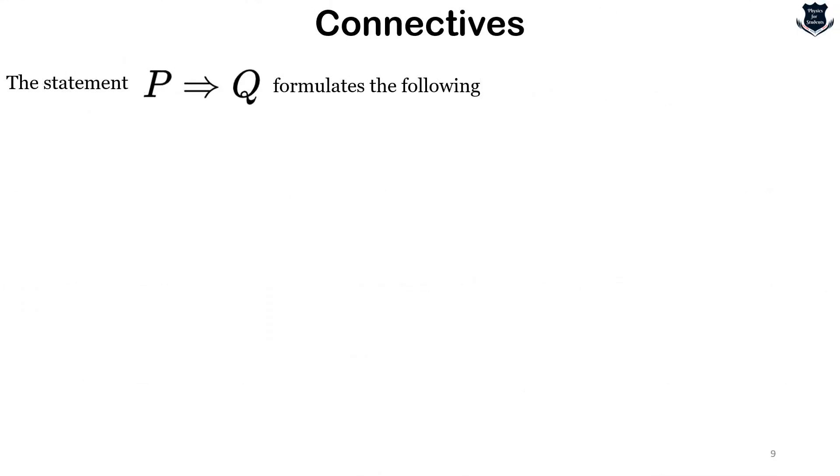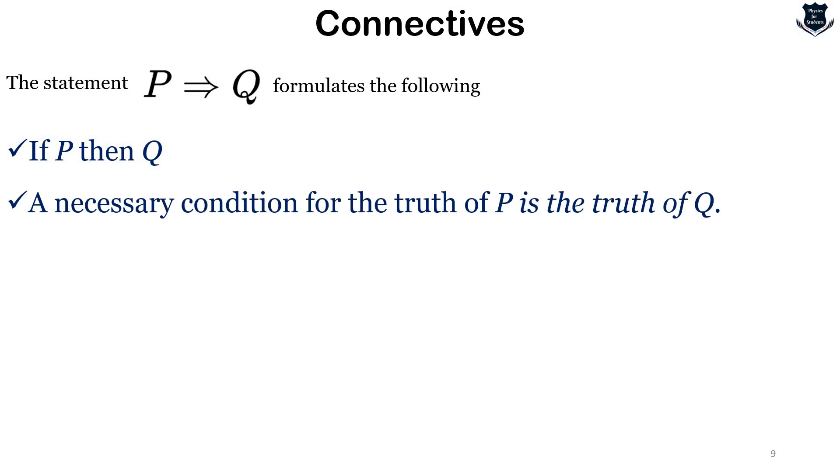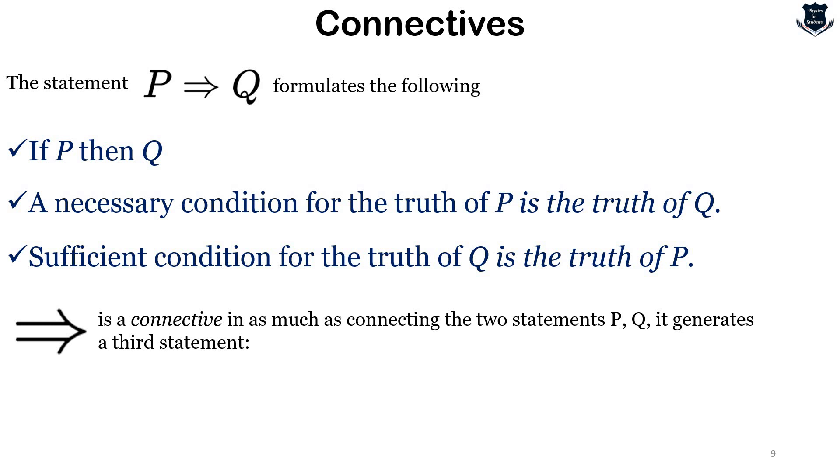The statement p → q formulates the following: if p then q, a necessary condition for the truth of p is the truth of q, and a sufficient condition for the truth of q is the truth of p. This symbol is a connective connecting the truth statements p and q, generating a third statement which is p implies q.